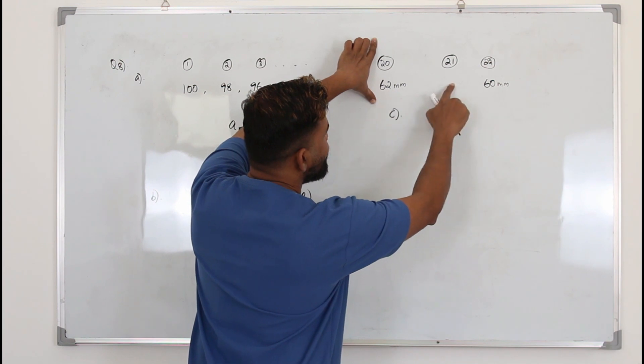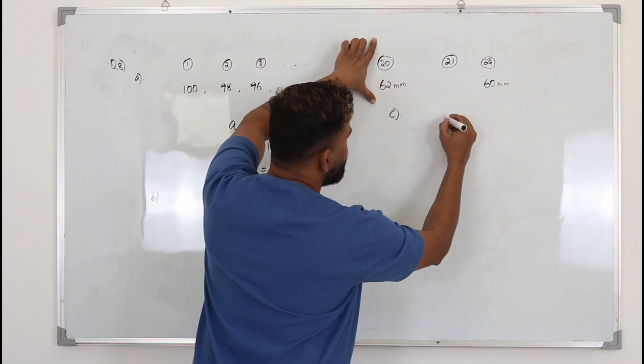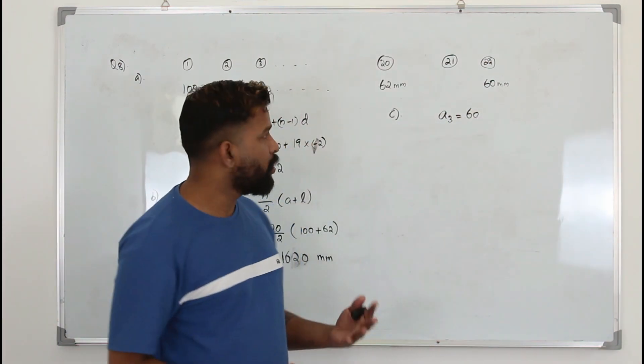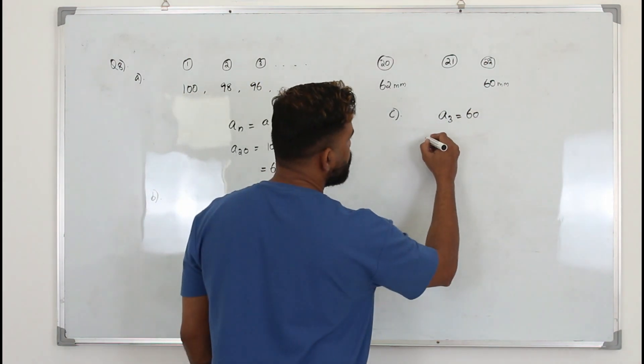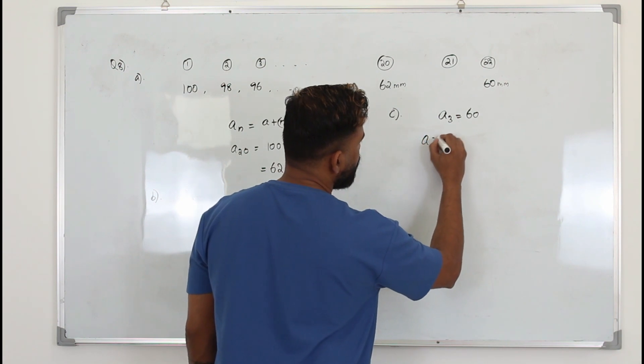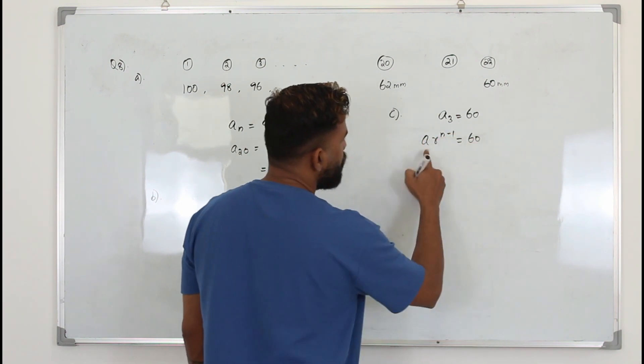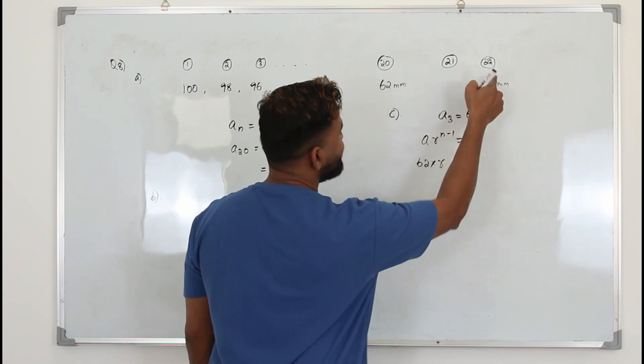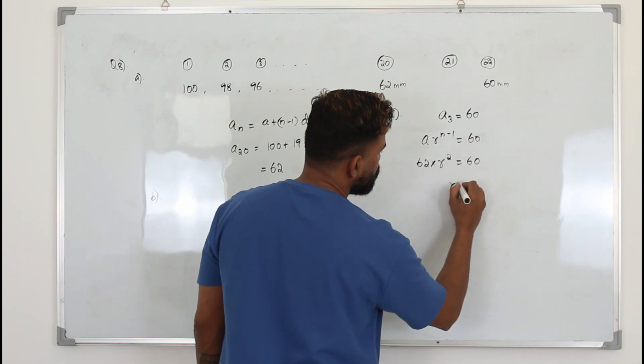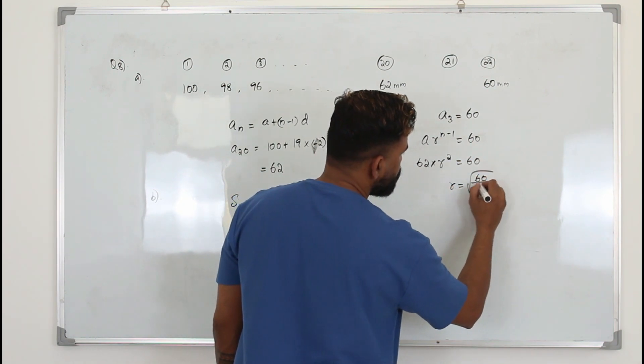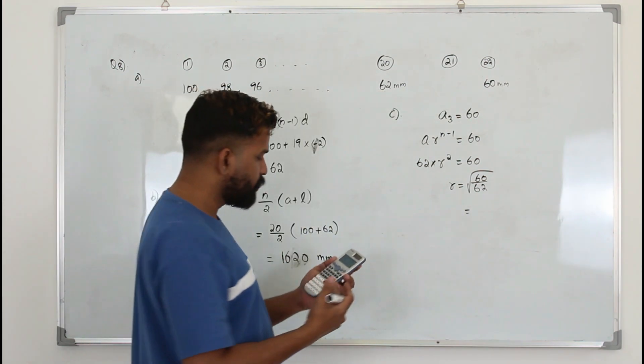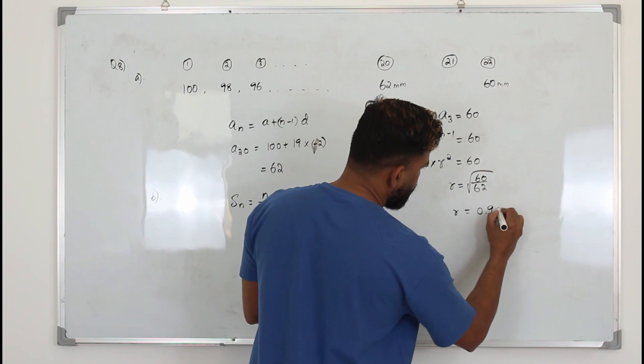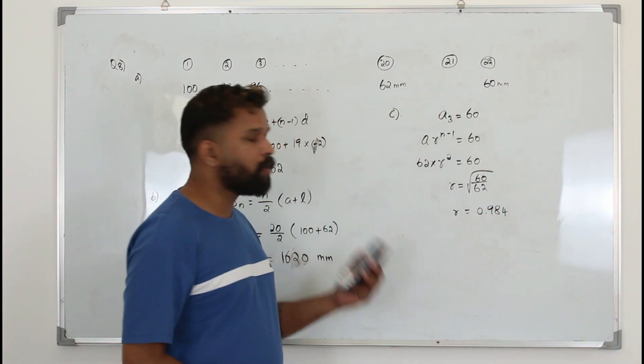So if it forms a geometric series from here, this is first term, second term, third term. a_3 is 60. In a geometric sequence, the nth term is a·r^(n-1). So a·r^(3-1) = 60, where a is the first term 62. So r will be square root of 60 over 62. They want the answer to 3 decimal places, so r is 0.984.